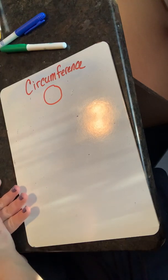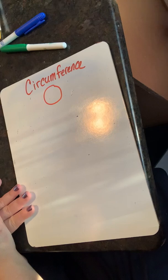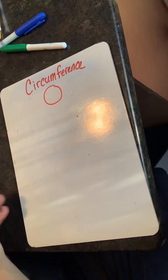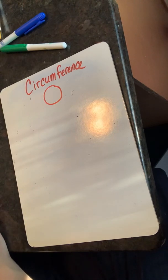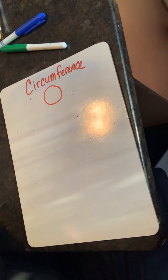In shapes with straight lines, we just add the measurements of each side. En formas con líneas rectas, solo agregamos las medidas de cada lado.